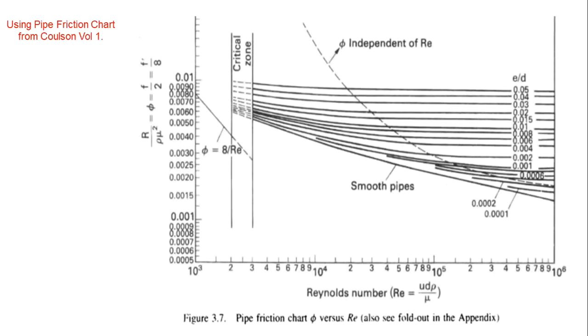We also have a pipe friction chart from Colson. Same with Perry's, it is also a function of Reynolds number versus surface roughness over diameter of the pipe.